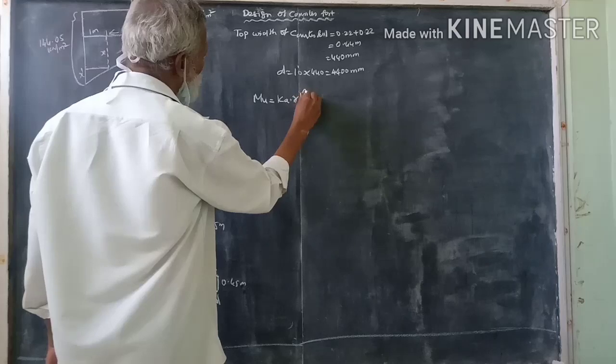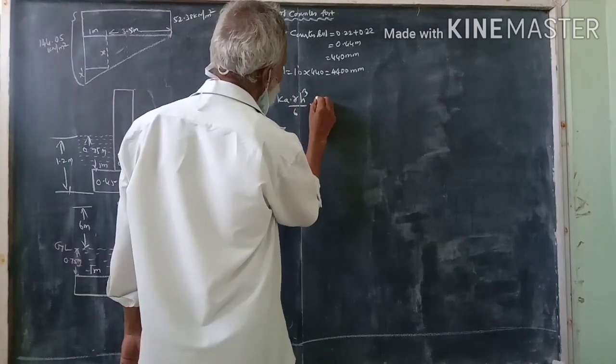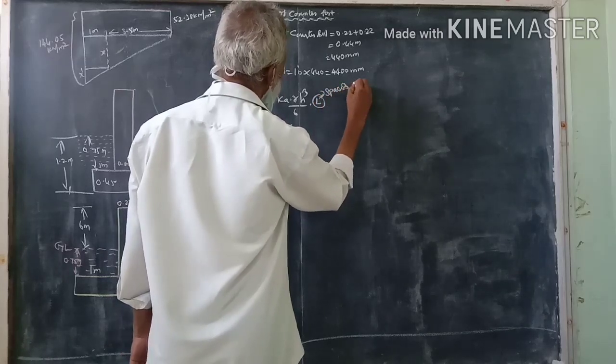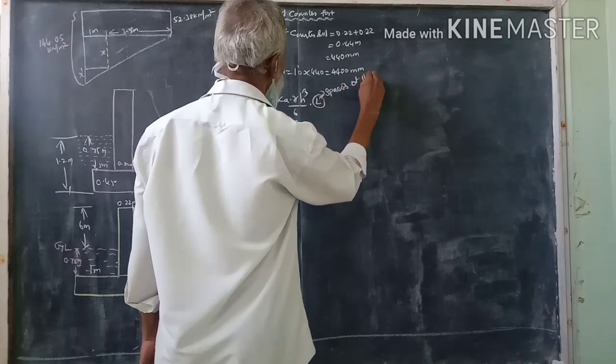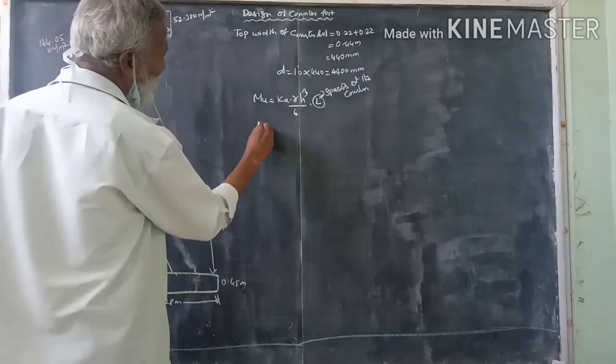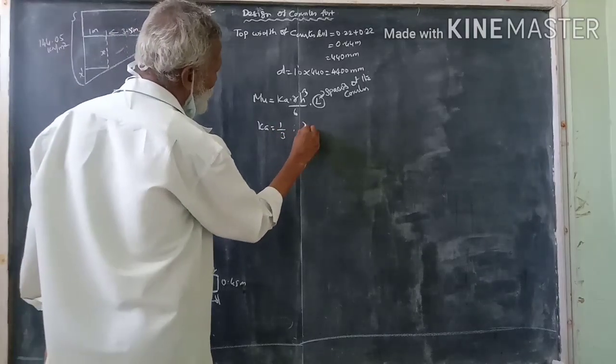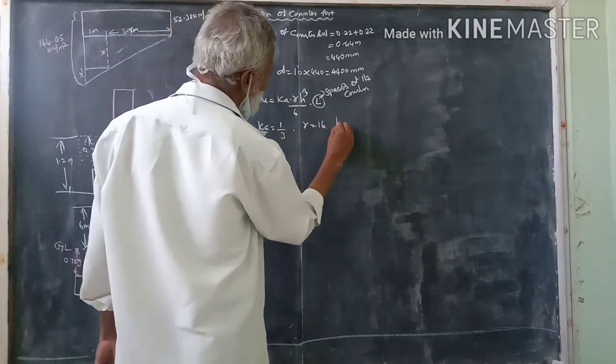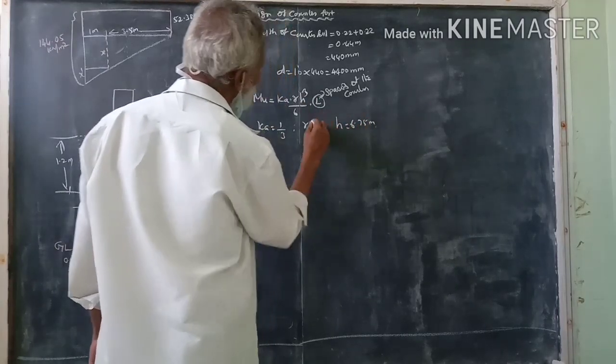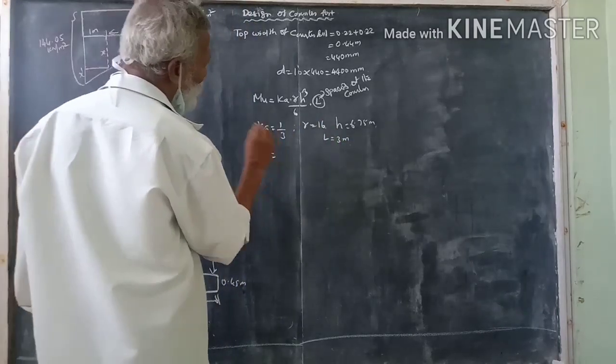Mu is equal to Ka gamma h cubed by 6 into L, the spacing of the counterfort. 1 by 3 gamma into 16, counterfort height 6.75 meter, L is equal to 3 meter, substitute mu.